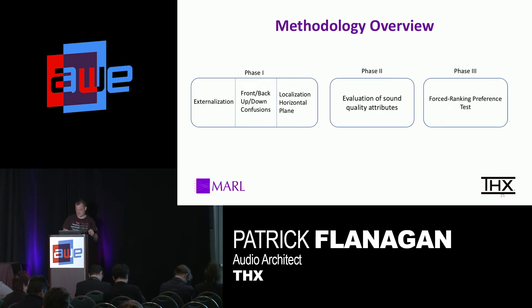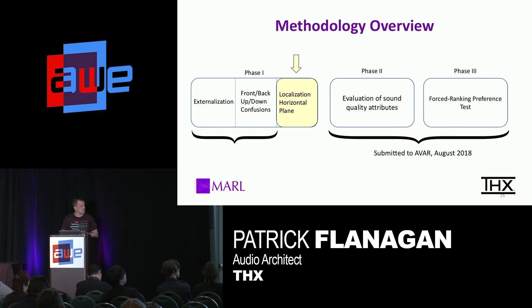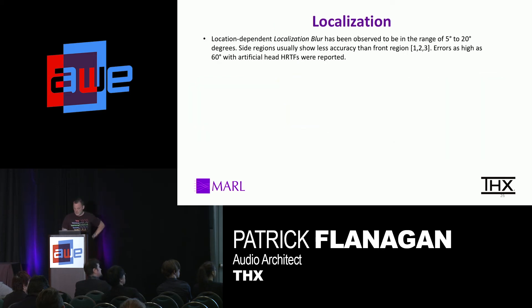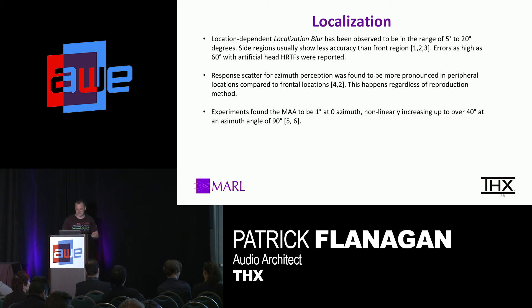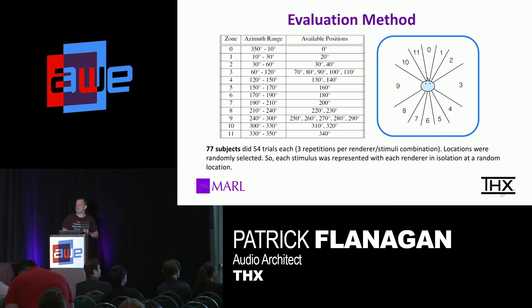We have time still, so let's move to the localization test — these are also submitted to a science conference for August. Localization is much like externalization, except localization is within a defined location. Localization blur is observed to be in the range of 5 to 20 degrees. Side regions usually have less accuracy — those are the regions directly next to you. Both of these papers are about 10 pages long and are available on the AES — the Audio Engineering Society — to download.